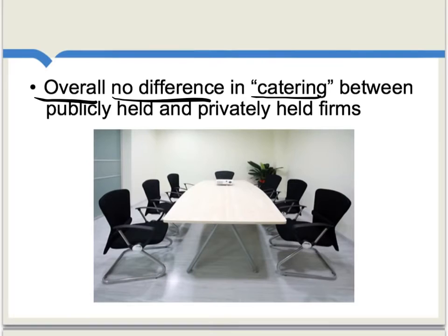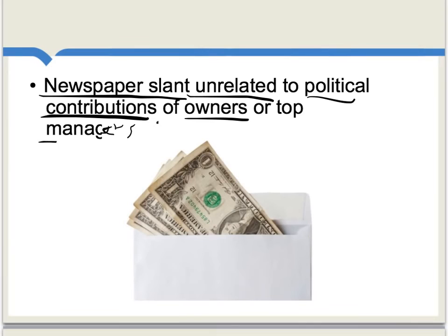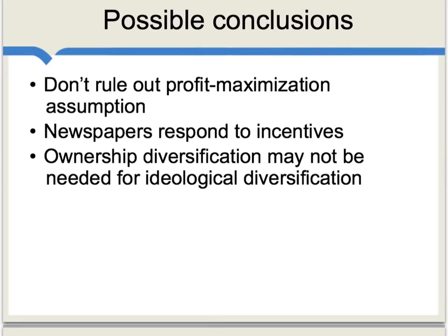Furthermore, overall, there is no difference in the amount of catering to reader preferences whether we look at publicly-held firms or privately-held firms. If you think ownership really matters, you might think a privately-held newspaper controlled by a family could twist the paper to its political views, but a publicly-held corporation would have to satisfy the preferences of the shareholders for profit maximization. When you see there's no difference between the publicly and privately-held firms, that again is at least consistent with the view that they are both slanting the newspaper to maximize profit. The authors also find that the slant of a newspaper is unrelated to the political contributions of the owners or the top managers of that paper. This again suggests that whatever slant we may find, it may well come from what readers are demanding.